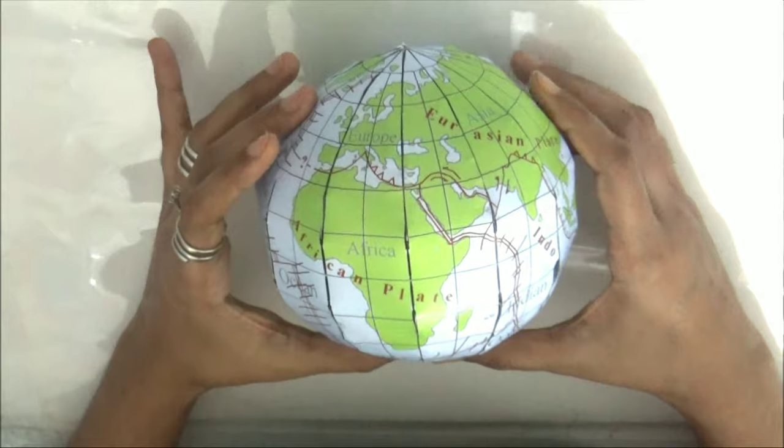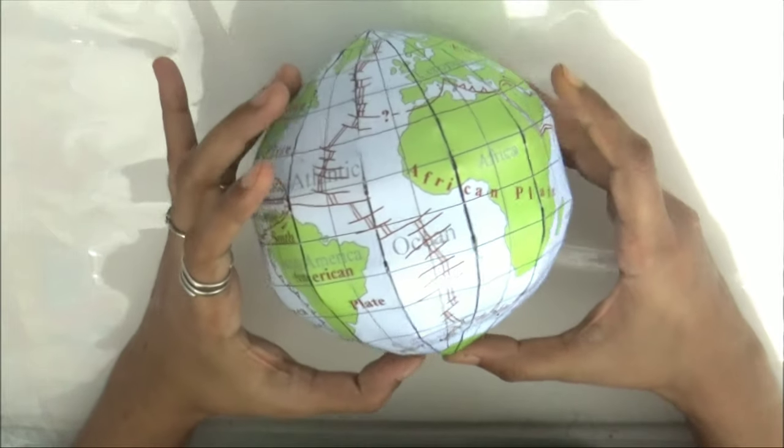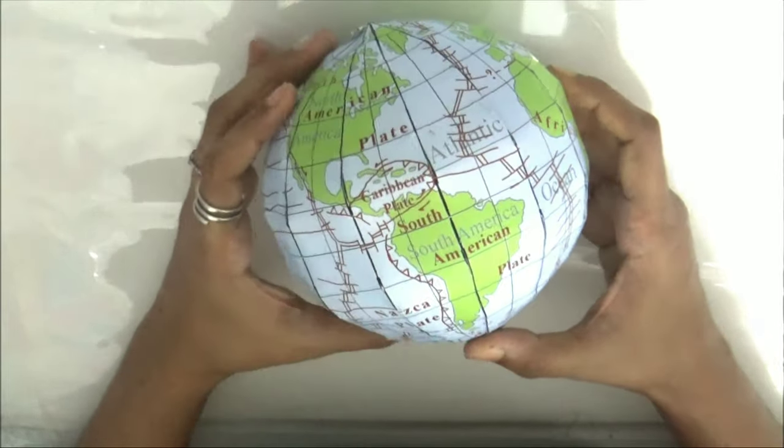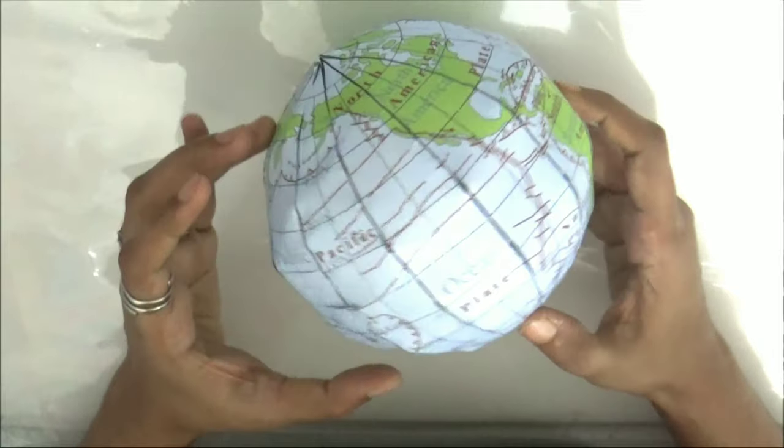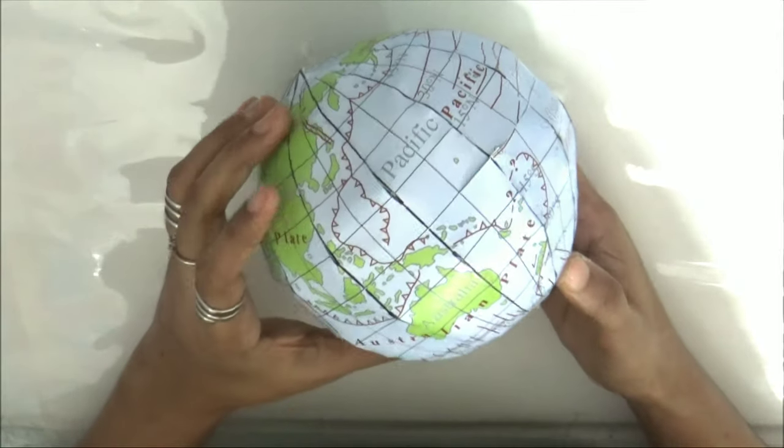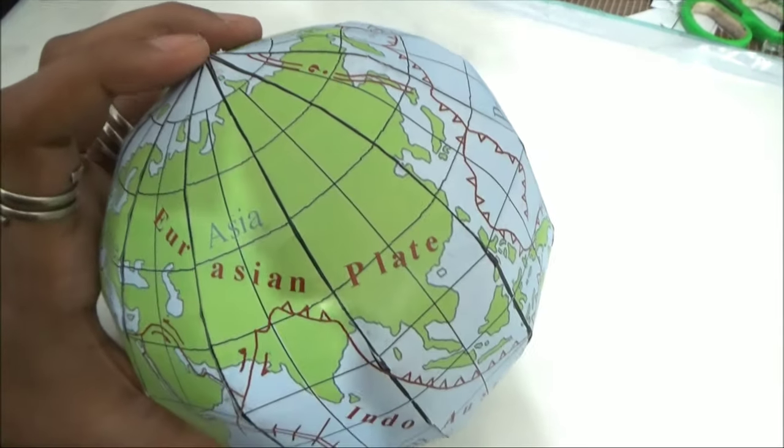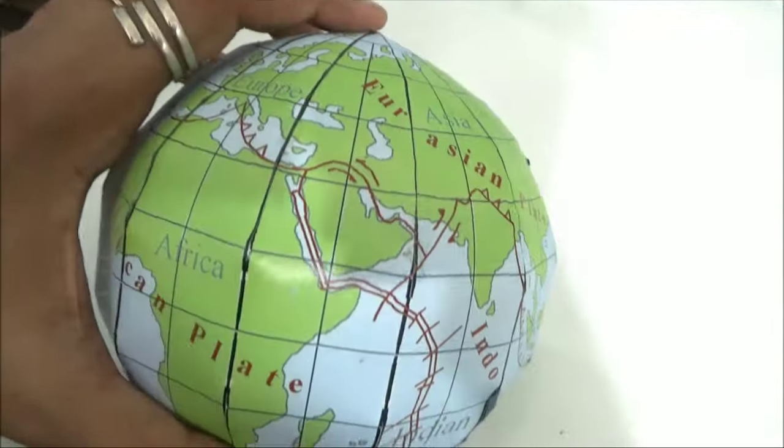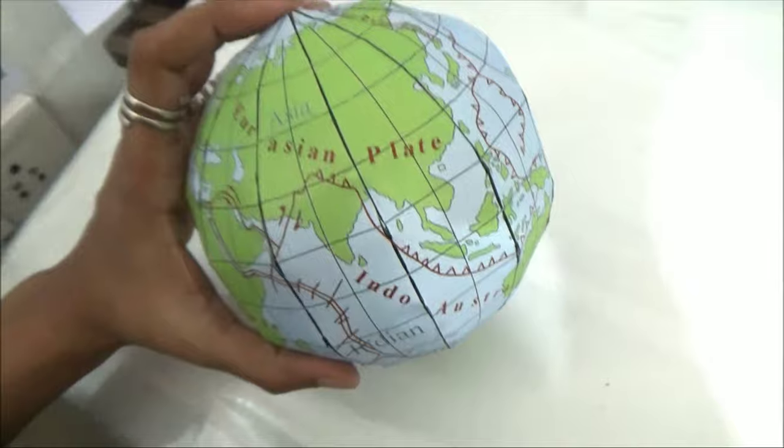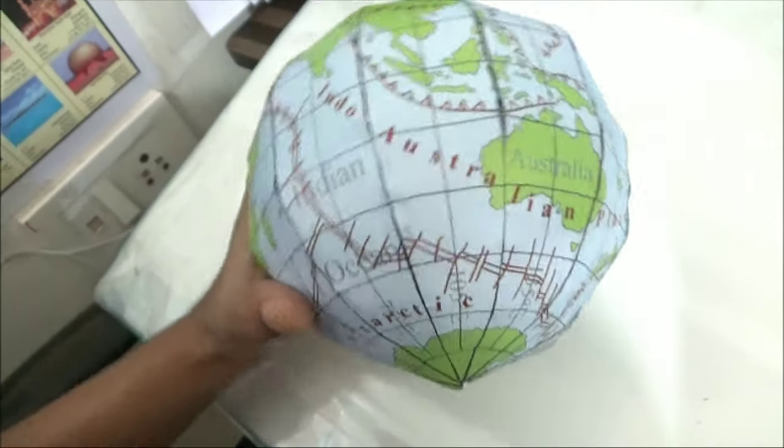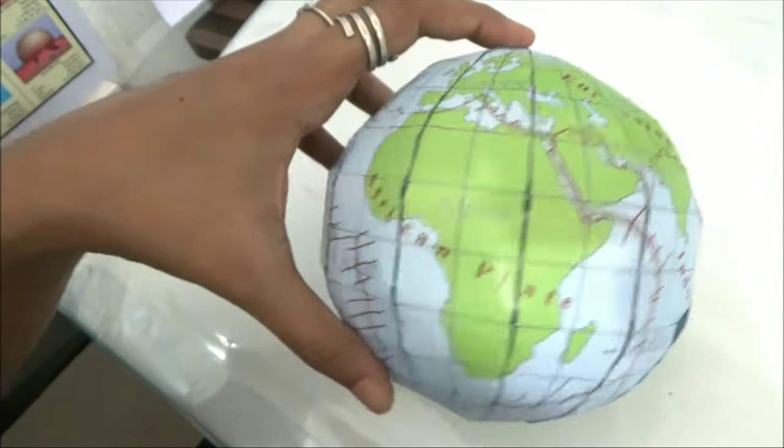So now we are ready to use our own DIY globe. Let's see what are the advantages of having a globe. First of all, the shape, the size, and the direction all are shown accurately on a globe, so this promotes our visual accuracy and overall this helps us to form accurate mental maps.